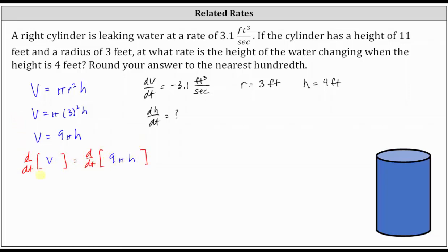Differentiating both sides of the equation with respect to t: the derivative of V with respect to t is dV/dt. On the right, the derivative of nine pi h with respect to t is equal to nine pi times the derivative of h with respect to t, which gives us nine pi times dH/dt. Because we're looking for dH/dt, we now need to solve the equation for dH/dt by dividing both sides by nine pi.